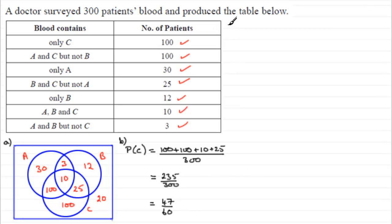Now, for part C, let's just draw a line down through here. For part C, we've got to work out the probability, knowing that this person has the substance A in their blood, we're given that, what's the probability they've got all three?